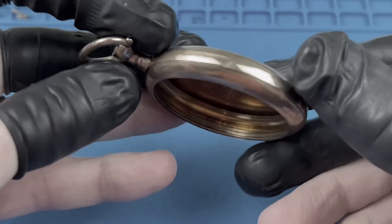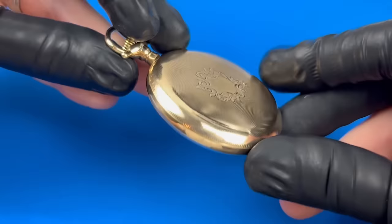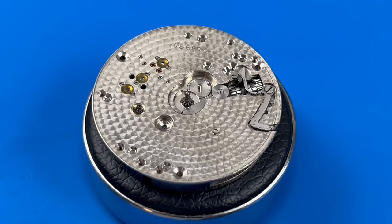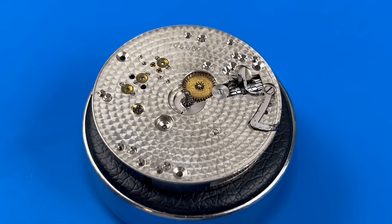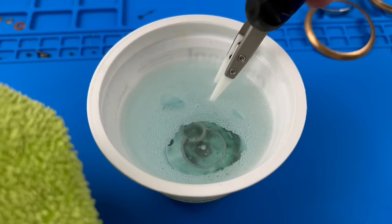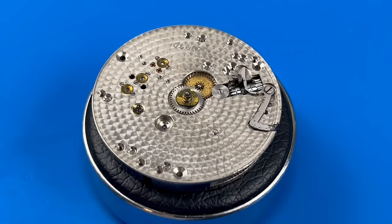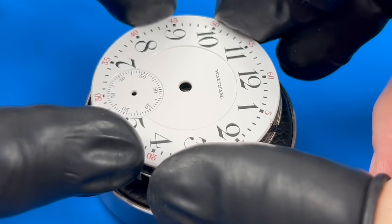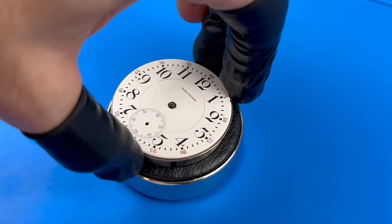Now a little before and after comparison. The minute wheel is installed with a slight bit of D5 on its post. The hour wheel is lowered on top of the cannon pinion. I'm placing a single dial washer rather than all three because I'm curious whether they're all needed.